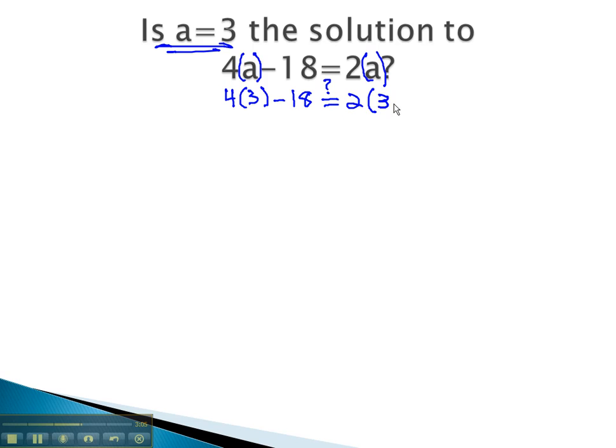a is 3. What we have is two order of operations problems, one on the left and one on the right of the equation. On the left side, we multiply first: 4 times 3 is 12, minus 18. On the right side, we multiply 2 times 3 is 6. We want to know, are those really equal?